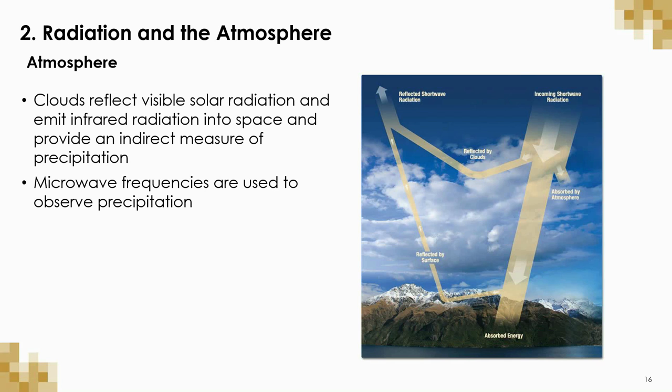This light would be most useful if it could interact with the objects that we want to study. Sometimes, though, the Earth's atmosphere gets in the way of this incoming radiation. Some of this energy will be reflected back into space by the atmosphere and the clouds, and some of it will be absorbed into the atmosphere as heat. And some of it will pass right through the atmosphere and will be able to actually interact with the Earth's surface. Even the energy that is reflected or absorbed by the atmosphere can provide us with information, like the ability to observe precipitation.